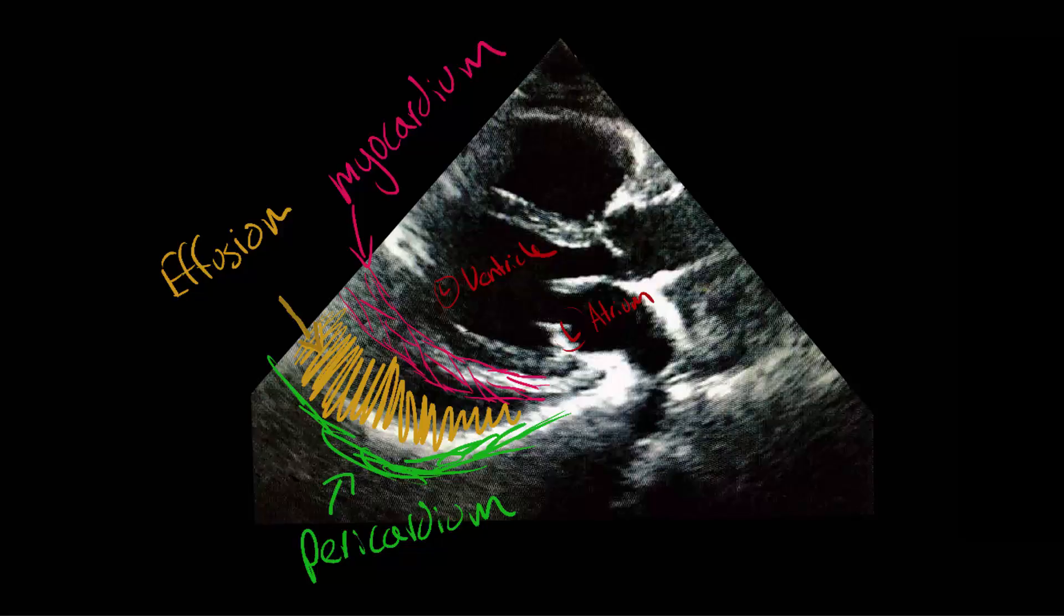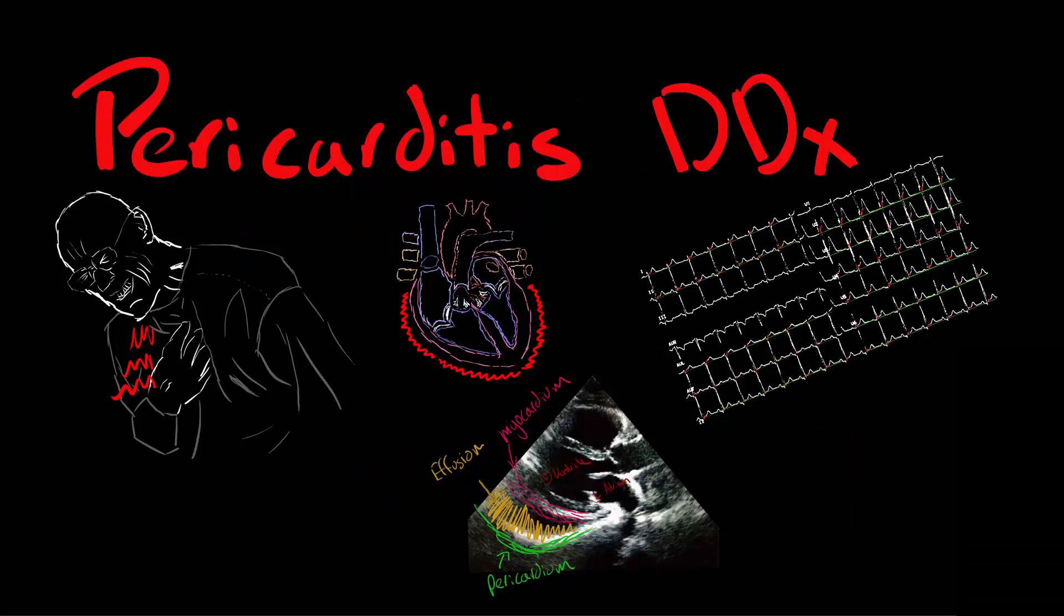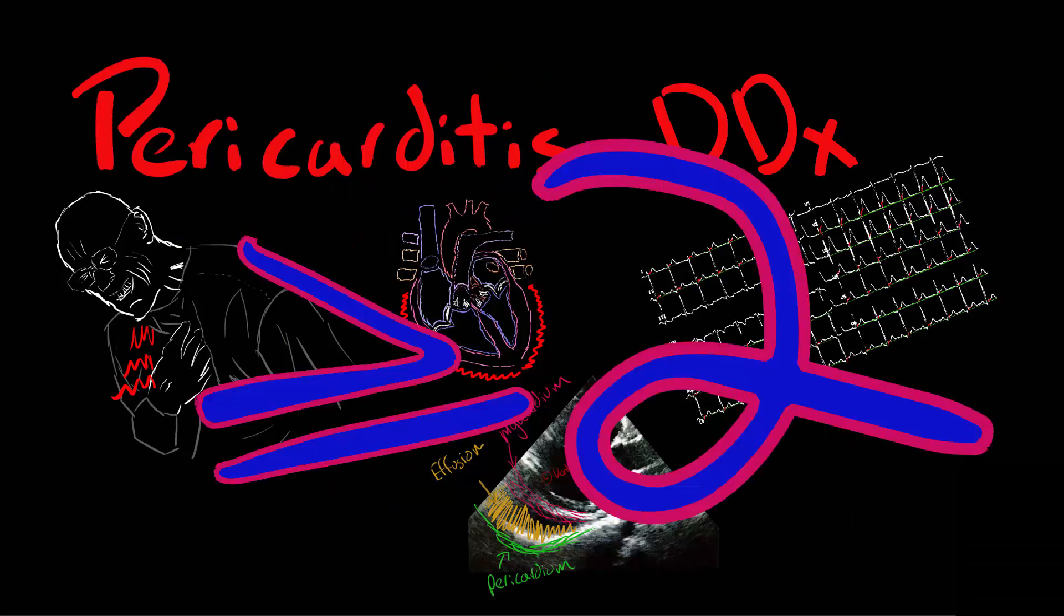More than half of patients with pericarditis will have one of these. It's the fluid byproduct of the inflammatory process all built up. Although just like the ECG, don't toss this differential out the window just because there isn't an effusion. Put this pathology at the top of your list of differentials if you have at least two of these findings.